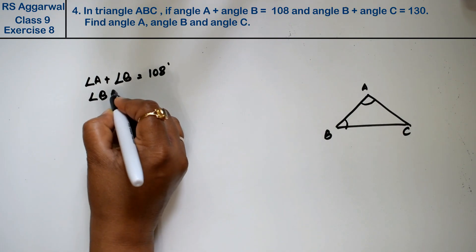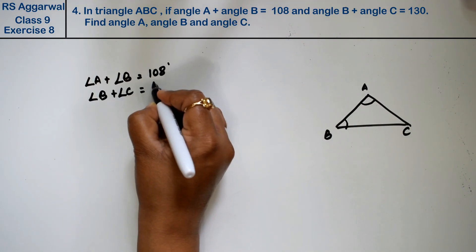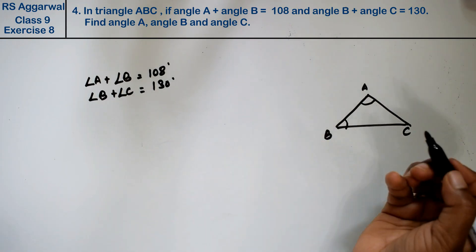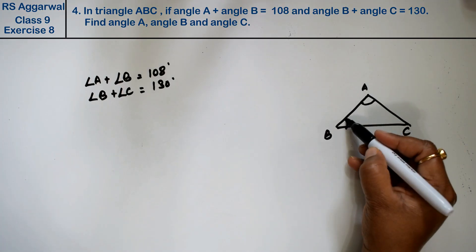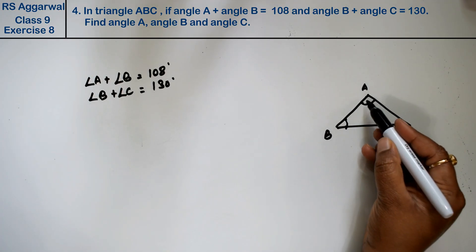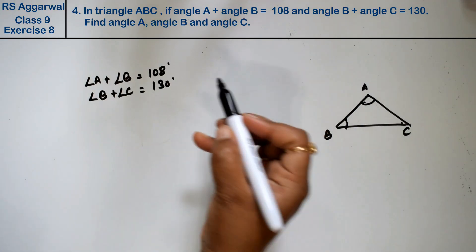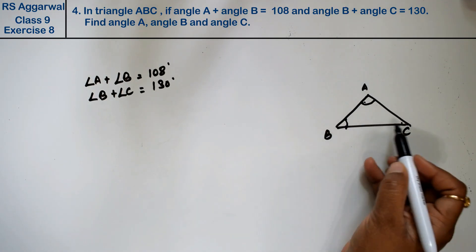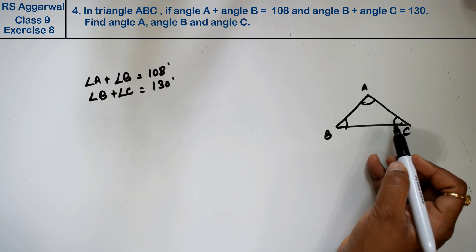We also have angle B plus angle C. These two sums are given: angle A plus angle B equals 108 degrees, and angle B plus angle C equals 130 degrees.